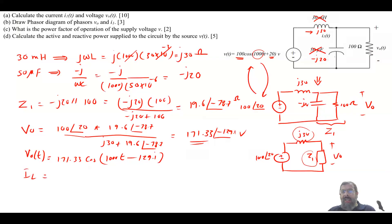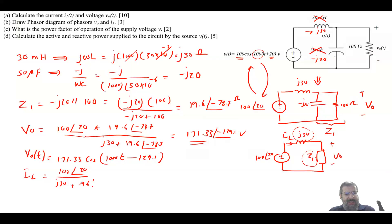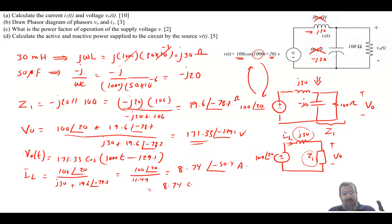To find I_L, divide the source voltage phasor by the total series impedance: I_L = 100∠20 / (j30 + 19.6∠−79.7) = 100∠20 / 11.44, which gives 8.74∠−50.4 amps. In the time domain: i_L(t) = 8.74 cos(1000t − 50.4°) amps.